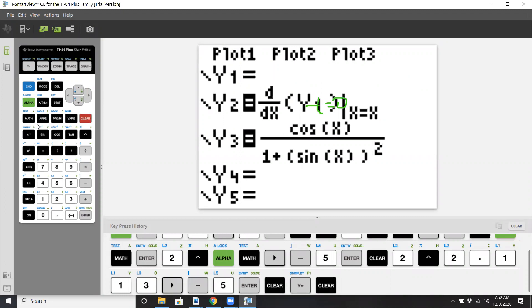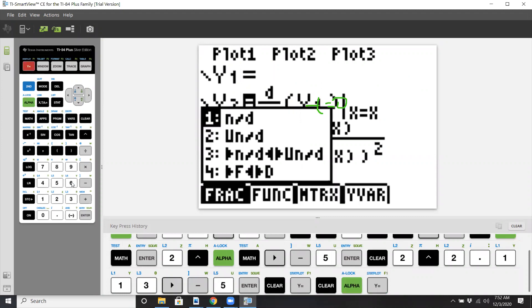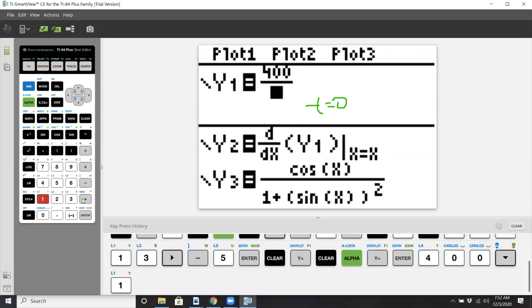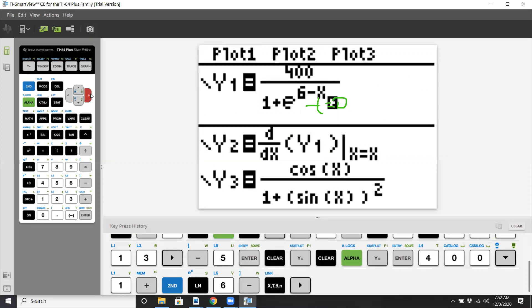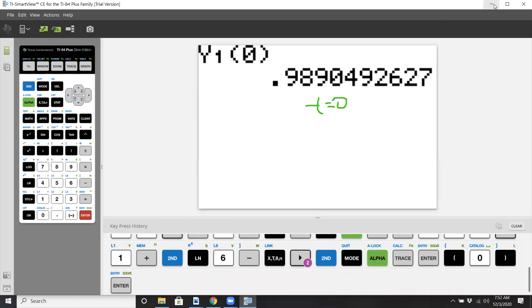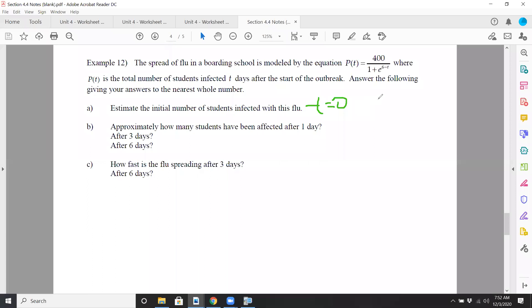And what I process that we do is we go back to our calculator. And let me put the original function in, which was 400. So I could actually do as a fraction. 400 over 1 plus e raised to 6 minus x. So that's y1. So I'm just going to do alpha trace and put in 0. So 0.989. But we want to round the nearest whole number. So we'll say one person is affected on the first day. Or initially, you have one person affected. And that person will obviously affect more people.